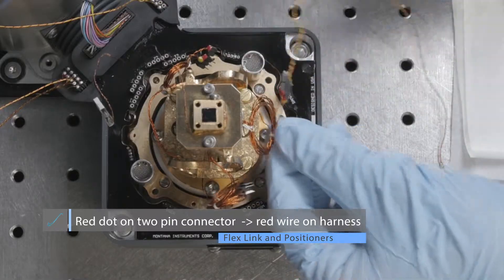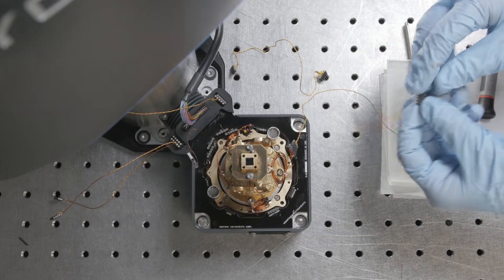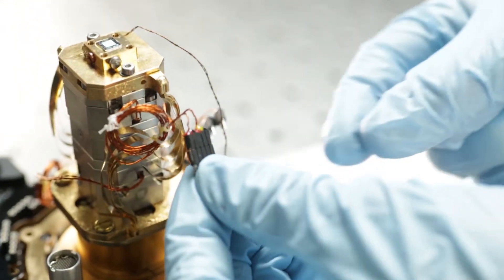On the open loop stages you just have a phosphor bronze wiring harness so it's a little bit easier, but you still want to keep pin one consistent so the red pin goes to pin one.